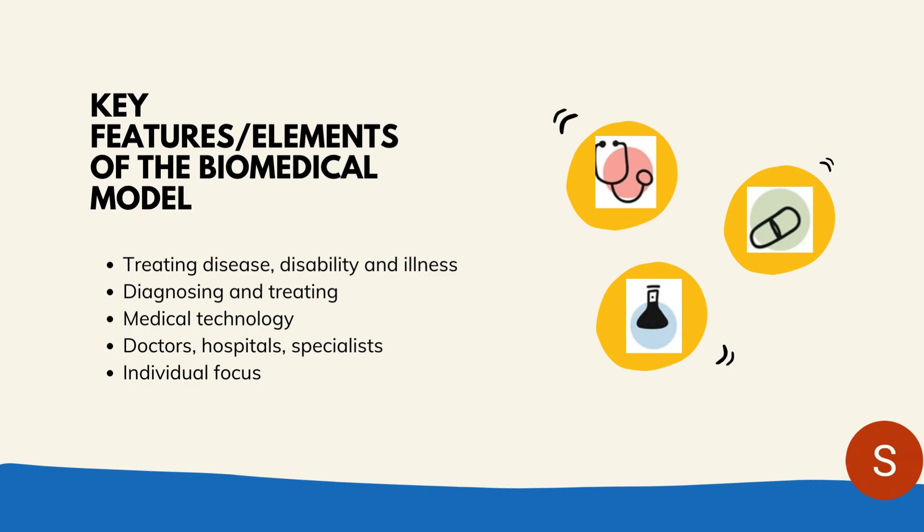Think about when you go to the doctor and present with symptoms — for example, after a sporting accident where you may have broken your leg. The doctor treats that broken leg, and you might then need to go to hospital or see a specialist. That is an element of the biomedical model. Another example is if an older person has a heart attack; they would go into hospital and most likely get surgery. That is also an element of the biomedical model — it is treating the disease once the disease is present and treating symptoms.